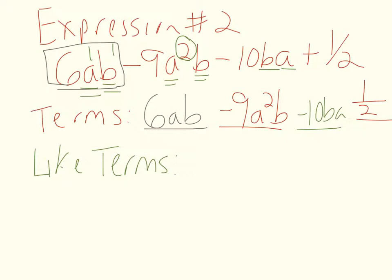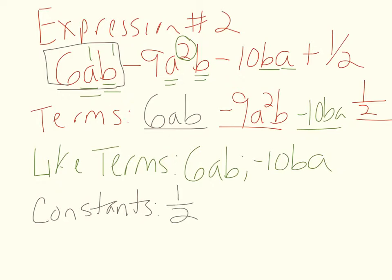So like terms then are 6ab and negative 10ba. Nothing else. We have nothing else alike in this problem. Next, let's identify our constants. Constants are numbers with no variables behind them. So our only constant is positive 1/2.